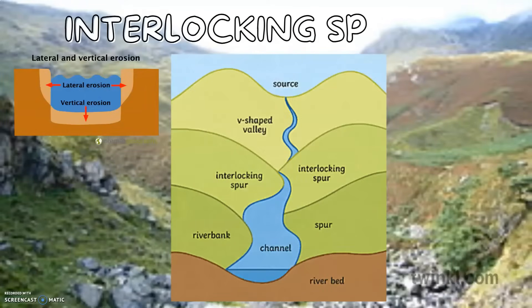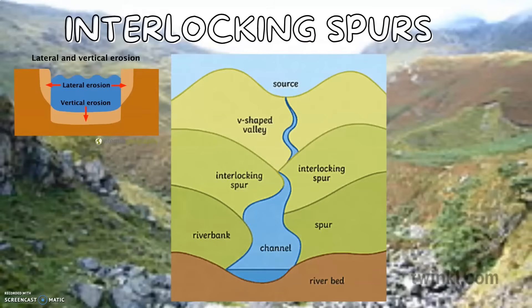Interlocking Spurs: In the upper course of a river, most of the erosion is vertical, creating steep-sided V-shaped valleys. The rivers lack the power to erode laterally sideways, so they wind around high hillsides that stick out into their paths on either side. These hillsides interlock with each other like a zip as the river winds around them, and are called interlocking spurs.